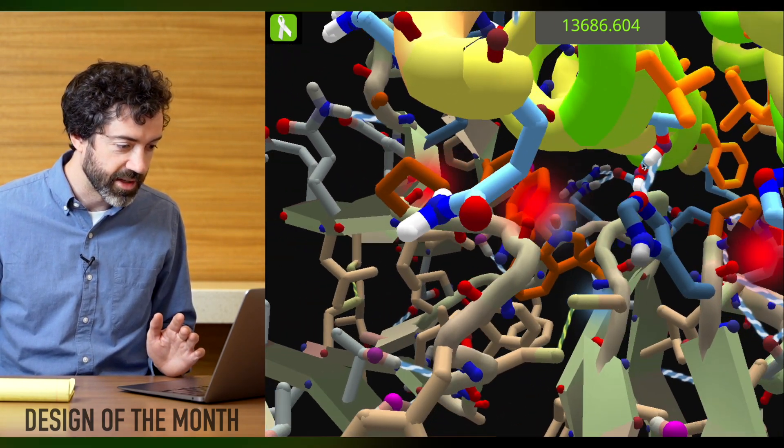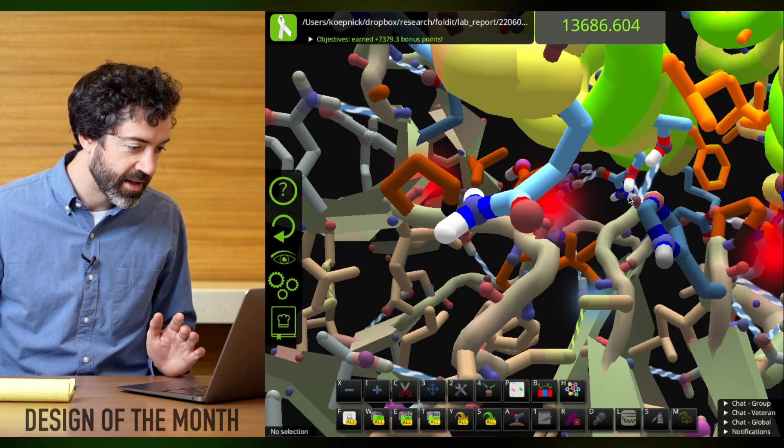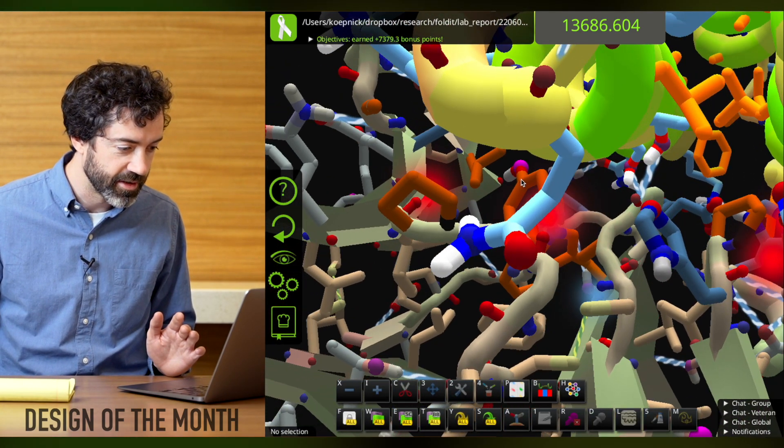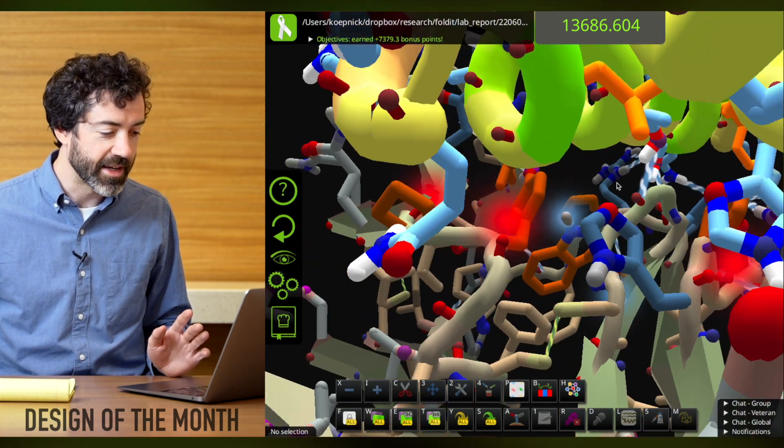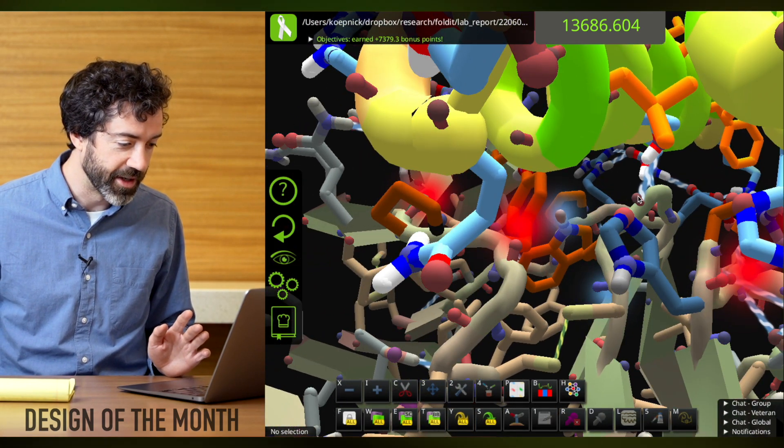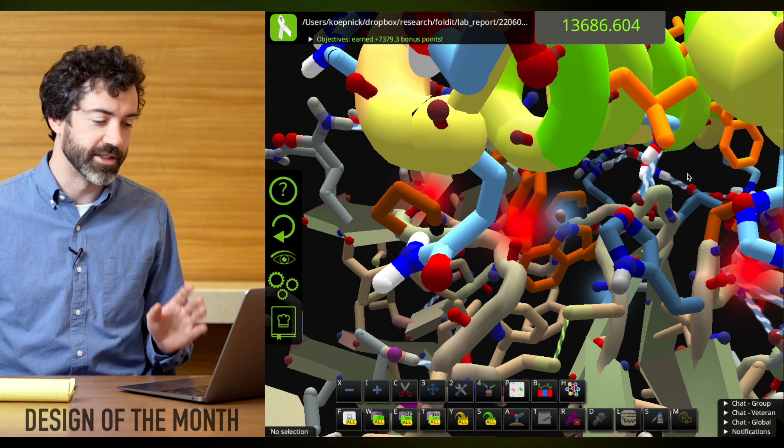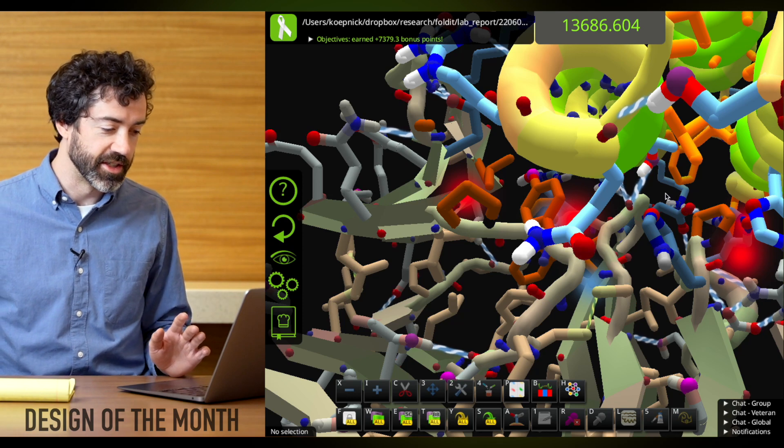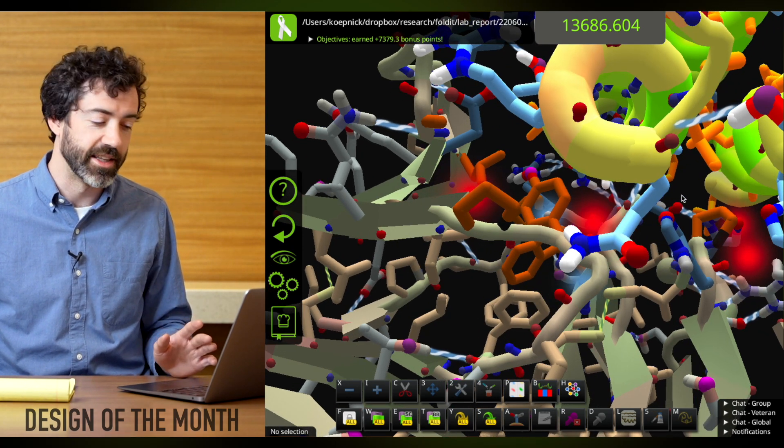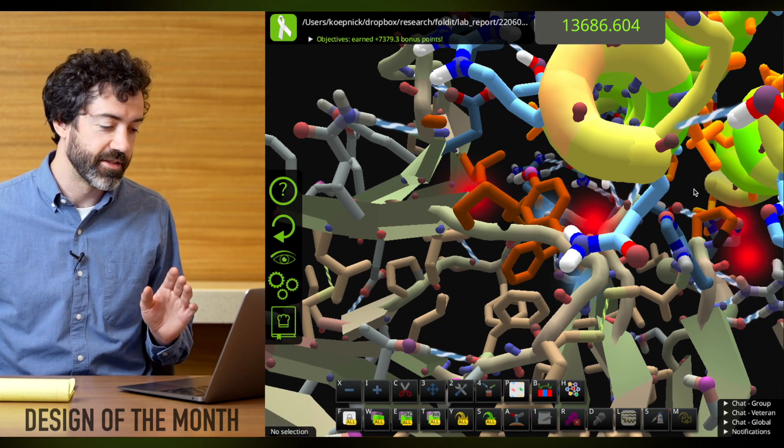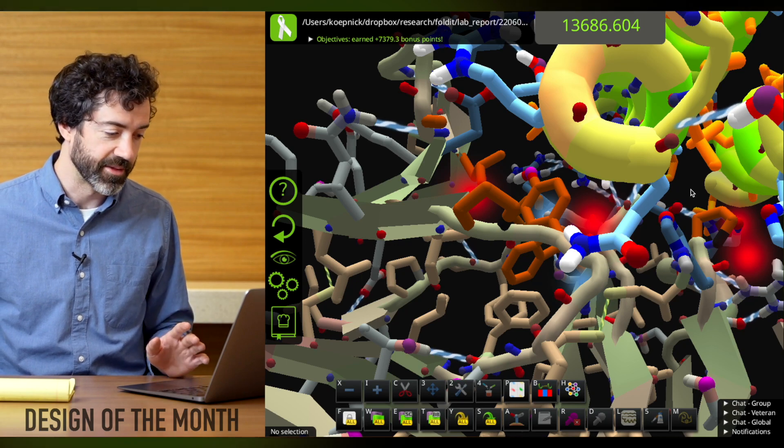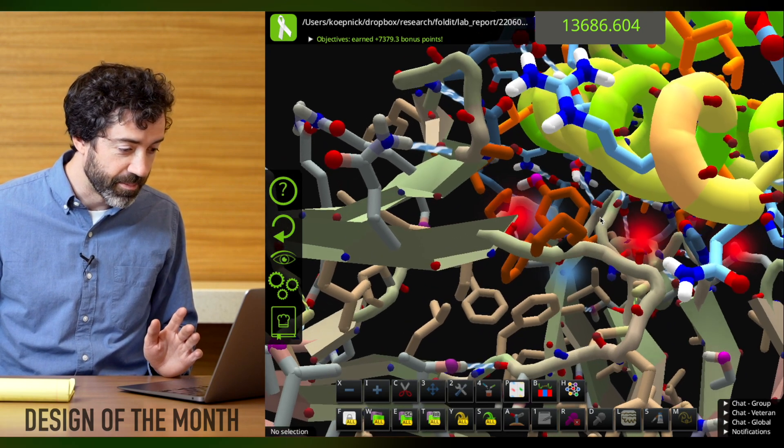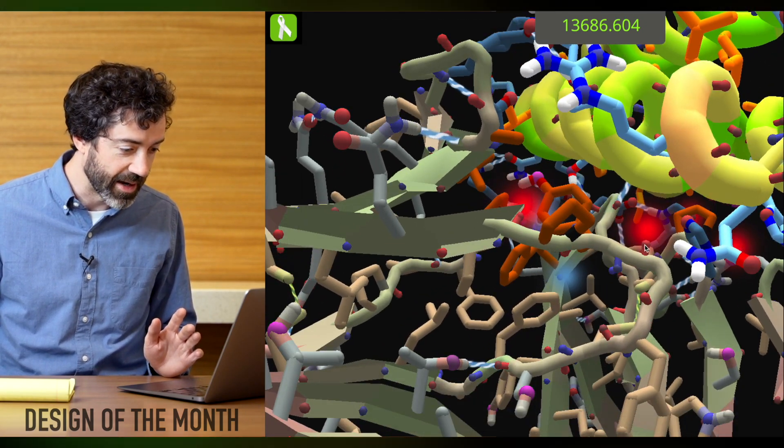And WBARM has placed a very nice threonine and serine right in the core of his binder, or in the core of the interface, I should say, to make hydrogen bonds with these buried polar atoms. And this is great. This is excellent. If we had not made hydrogen bonds to these polar atoms, they would become BUNs and they would be very disfavorable for binding.